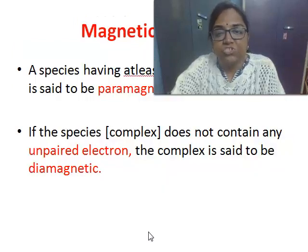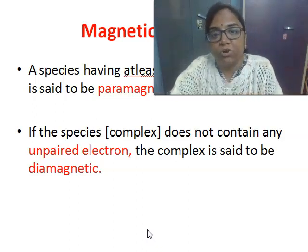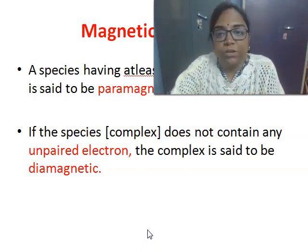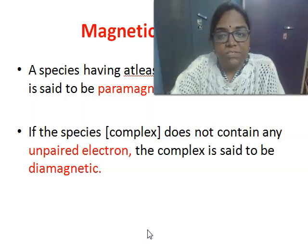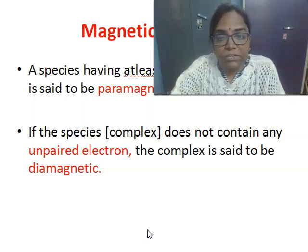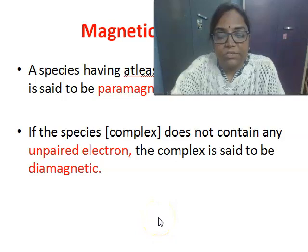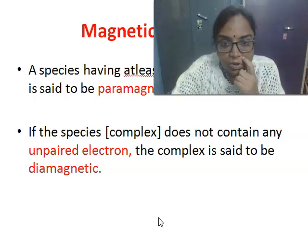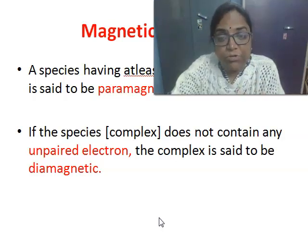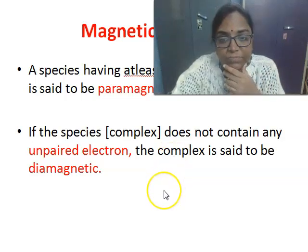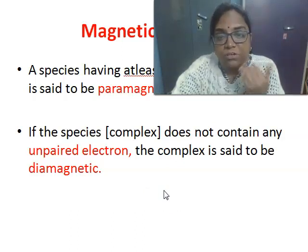Next comes the prediction of the magnetic properties of a complex. A species having at least one unpaired electron is said to be paramagnetic. If the complex does not contain any unpaired electrons, that complex is said to be diamagnetic. This is one of the merits of valence bond theory — it allows us to predict whether a complex is paramagnetic or diamagnetic, and is very useful in predicting the magnetic moment of a particular complex.